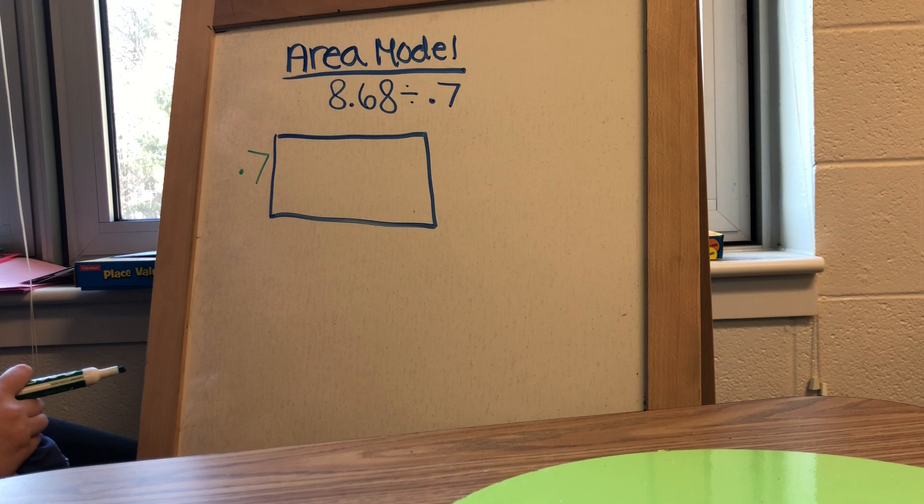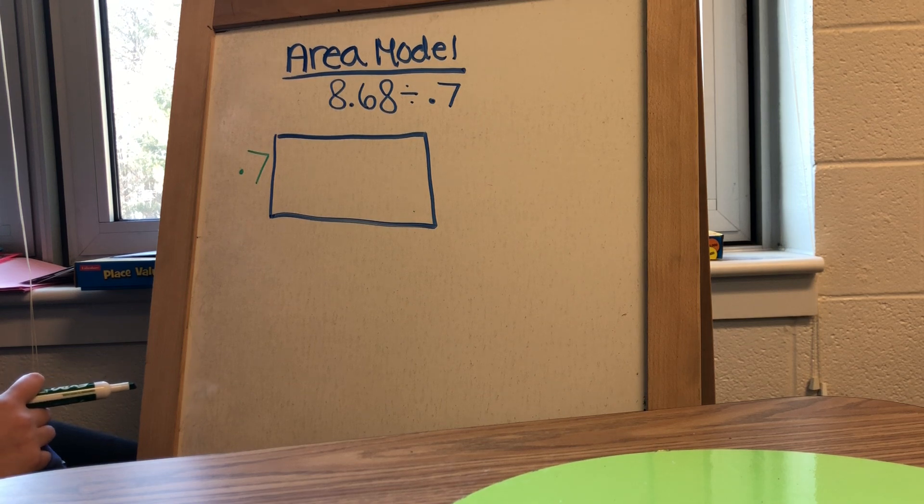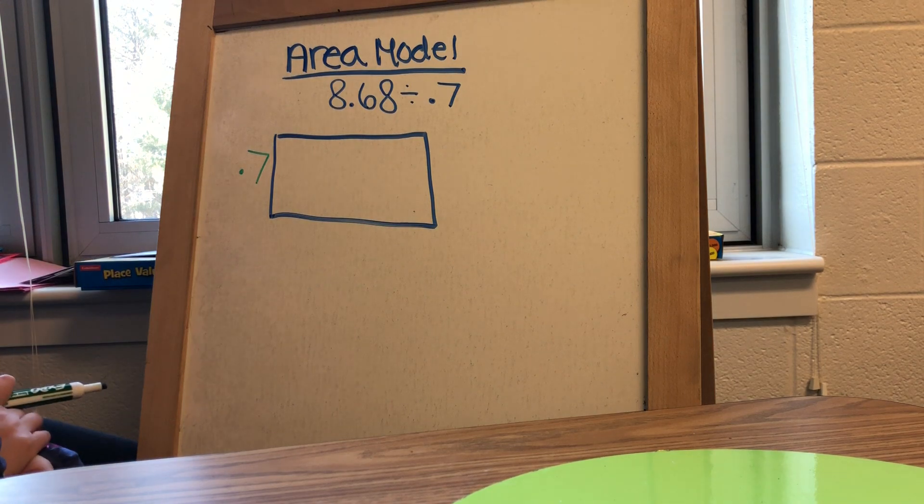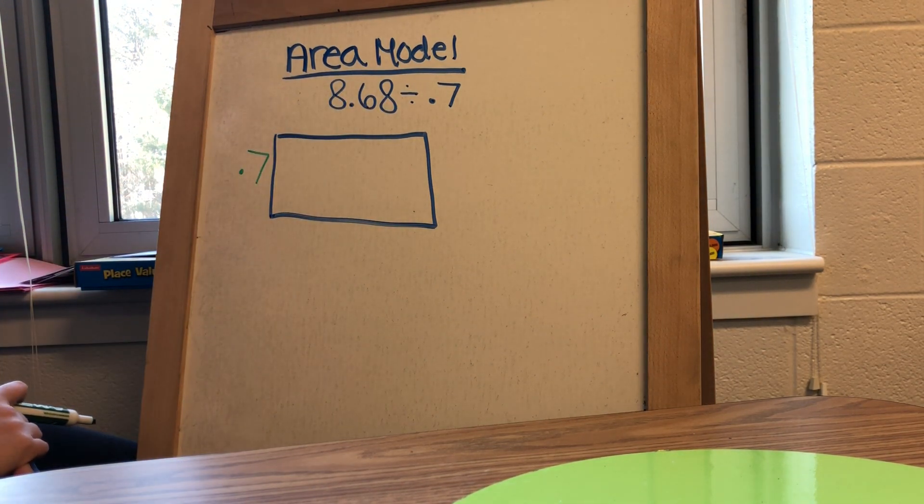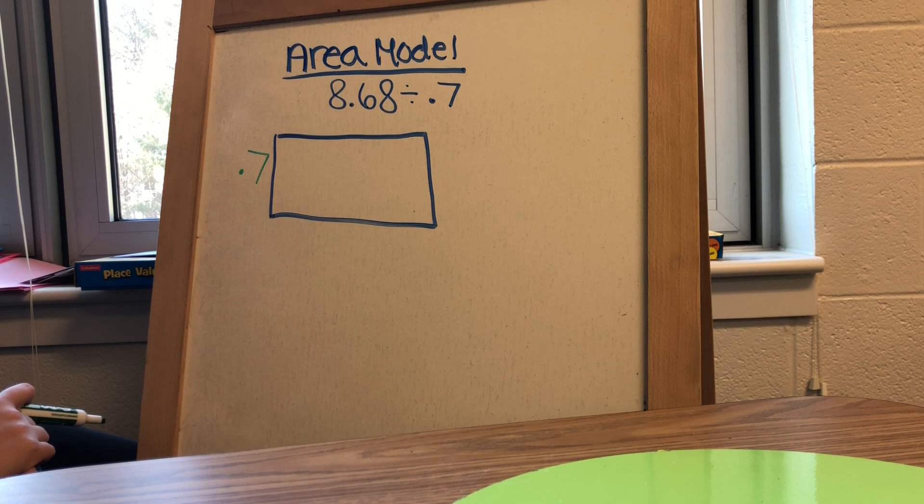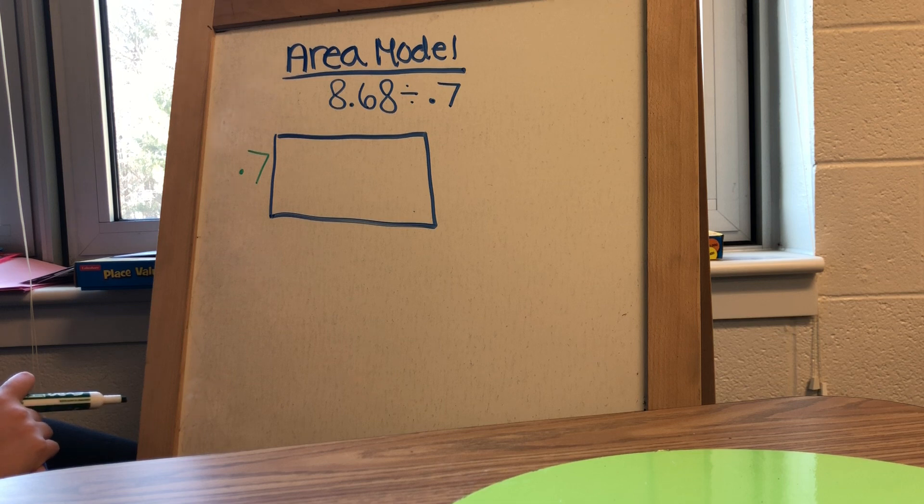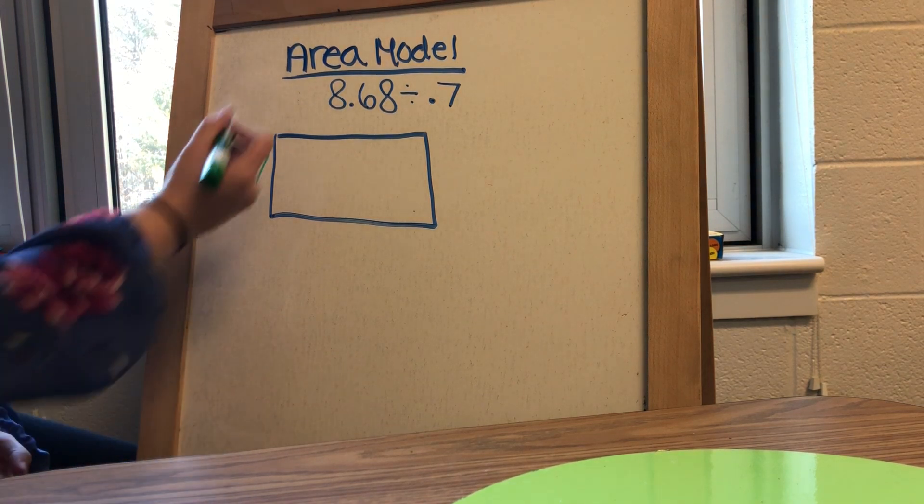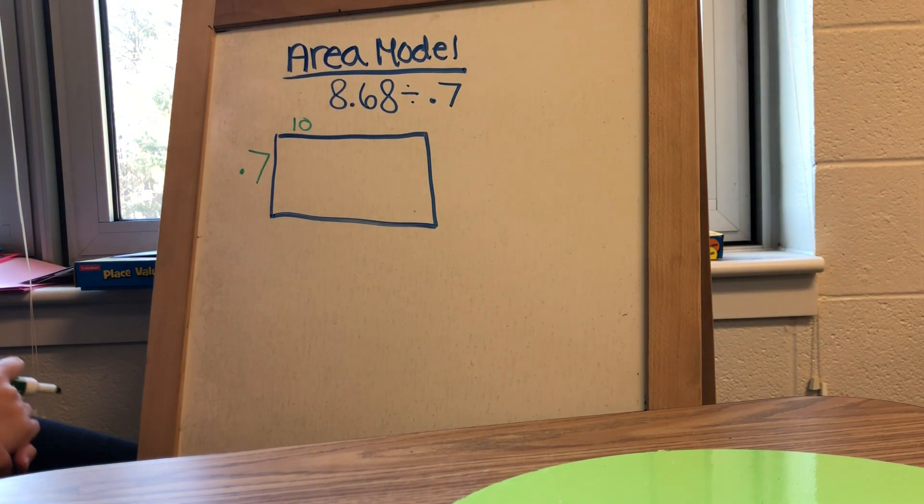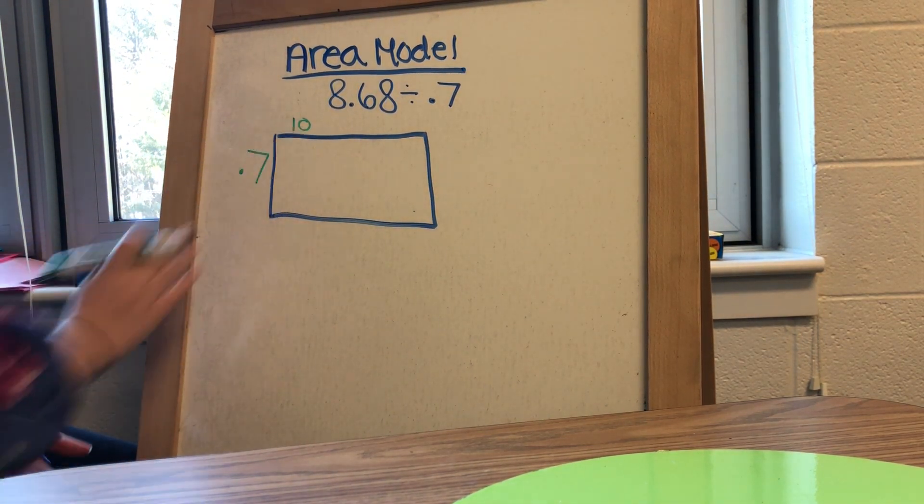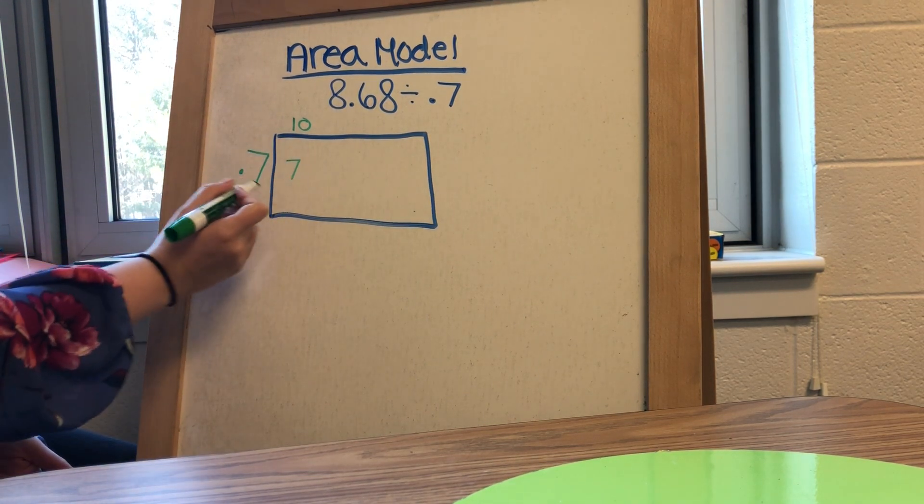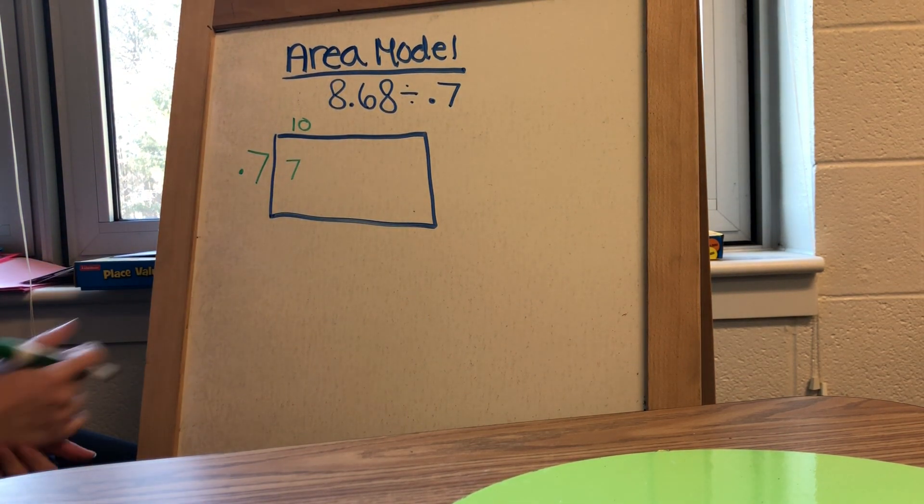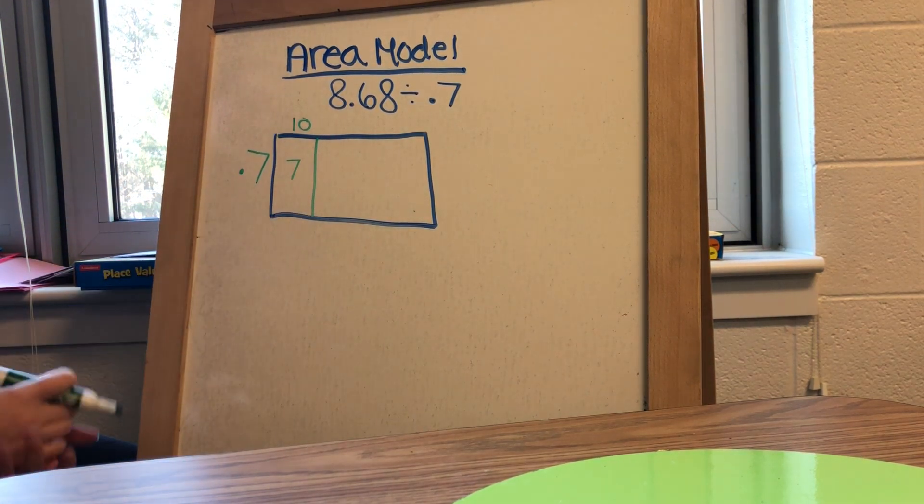So with division, you basically just start with a guess. You say, about how many times do I think 7 tenths can fit into 8 and 68 hundredths. So I like to tell my students to start with a friendly number, like 10, 20, 30, 100, 1,000, anything that's really easy to multiply. So a lot of the times they'll start with something like 10. If I multiply 7 tenths times 10, I'm going to end up getting 7 wholes. I would move my decimal once to the right, so I would end up getting 7 wholes. So that's going to be the first section of my box.